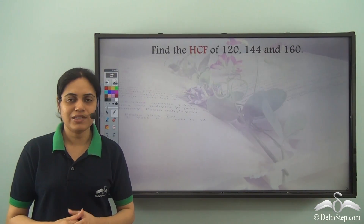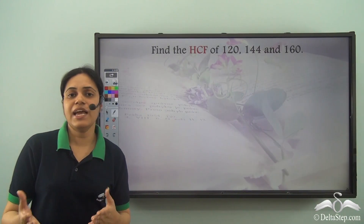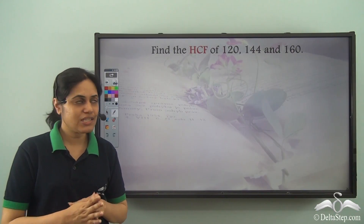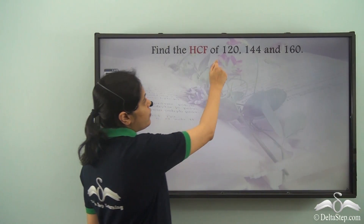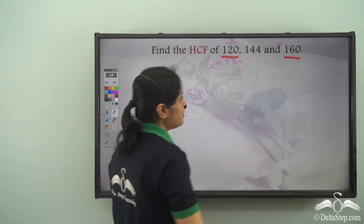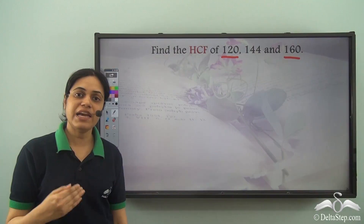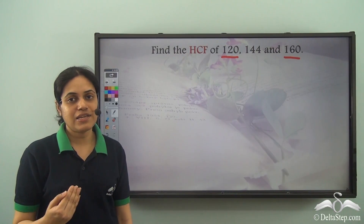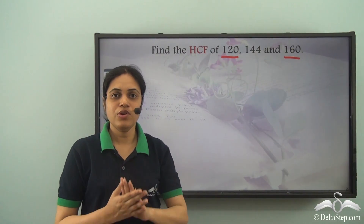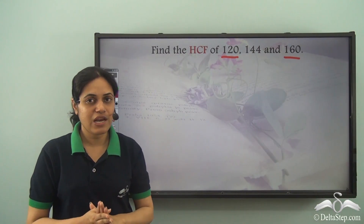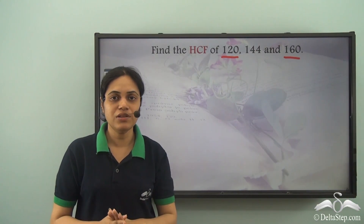It is possible to do that. Let us see how. First, take any two numbers — you can take any two out of the three numbers. Suppose I take 120 and 160. I need to first find their HCF. For the time being, forget about 144 and find the HCF of 120 and 160 by the long division method.